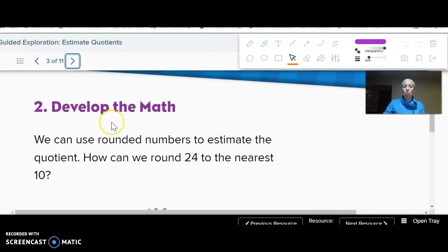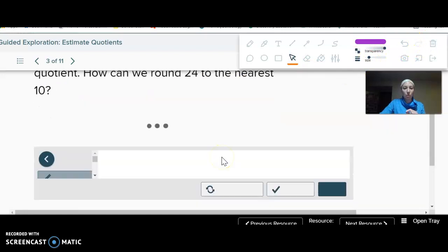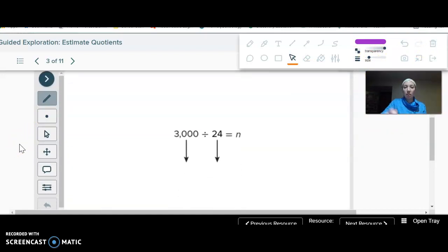Well, the first way is to use rounded numbers. I know the line's really long, I just figured I'd give you lots of space. We can use rounded numbers to estimate the quotient. So we can just round like normal. Now, just know this way does not always work. So that's why I'm going to also show you a different way. So if we round 24 to the nearest 10, then we get 20. So then I'm just doing 3,000 divided by 20.